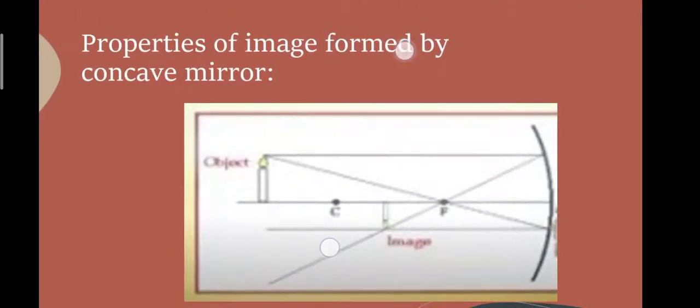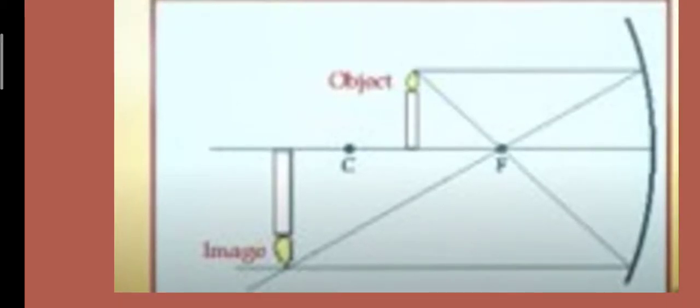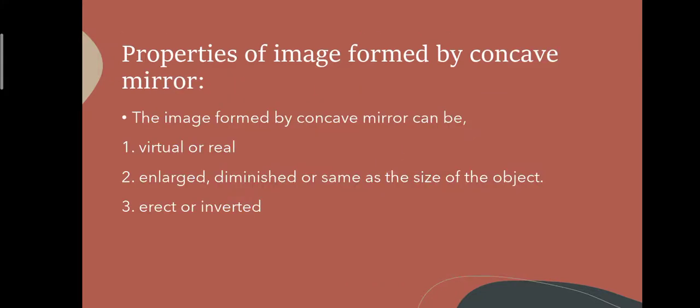In another case, when the object is between the centre of curvature and focus, the image is enlarged and inverted. For a plane mirror we have only the object and the mirror, but for a spherical mirror we have the mirror, the object, and a screen. Which image will form depends on the distance between the screen, the object, and the mirror.